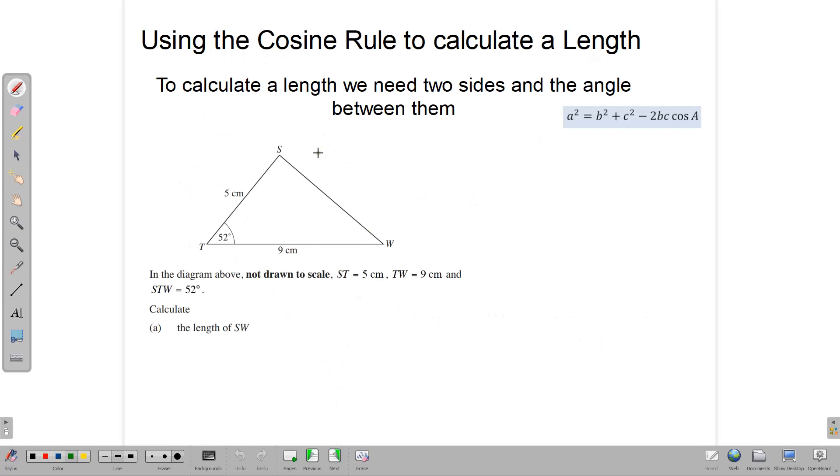Let's use the cosine rule to calculate a length. Here's the formula: a squared is equal to b squared plus c squared minus 2bc cos A. We want to find SW. So we're going to start with SW squared, and SW squared is going to be equal to the other two sides squared, 5 squared plus 9 squared.